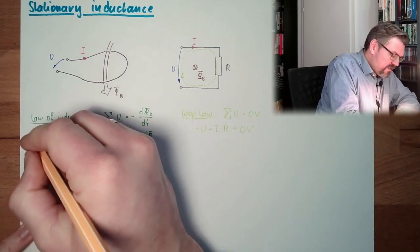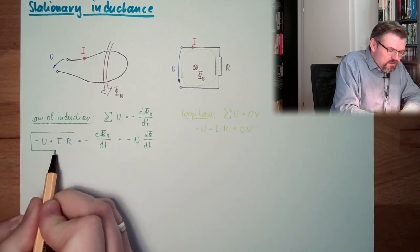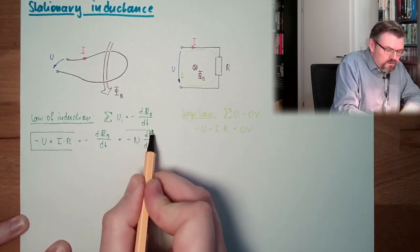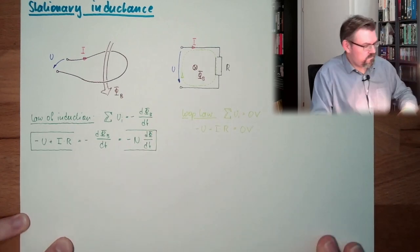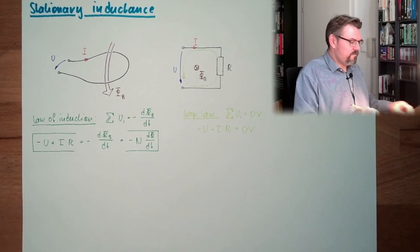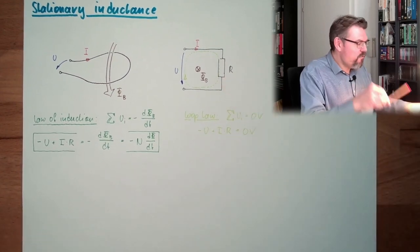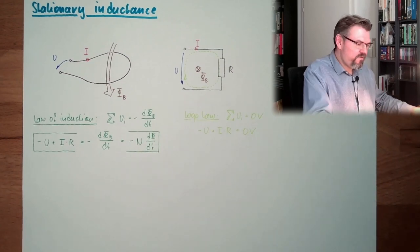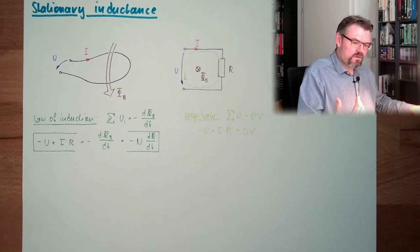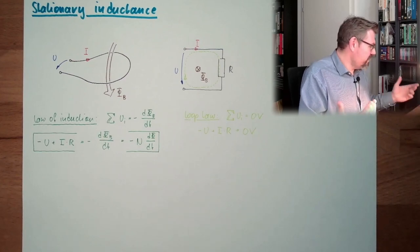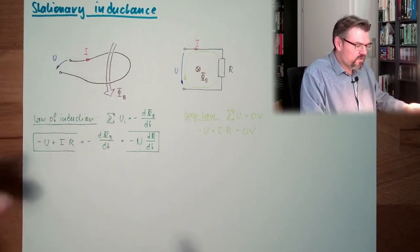And this is actually the stationary inductance law. And with this explanation, with this R here, I really hope that you understood where this I times R is coming from. Because actually, this is not that easy.